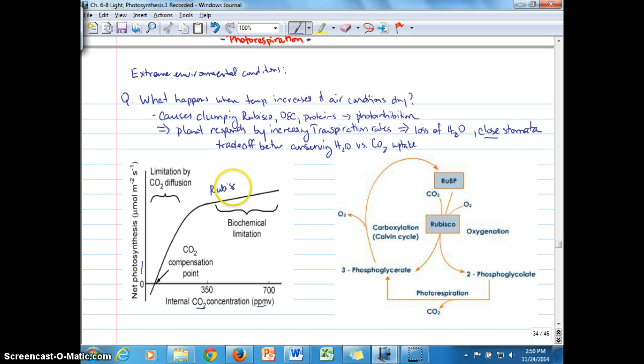rubisco saturation or RUBP, which is the CO2 acceptor molecule. This is the enzyme, and this is the CO2 acceptor. RUBP limitation in terms of the CO2 acceptor availability.